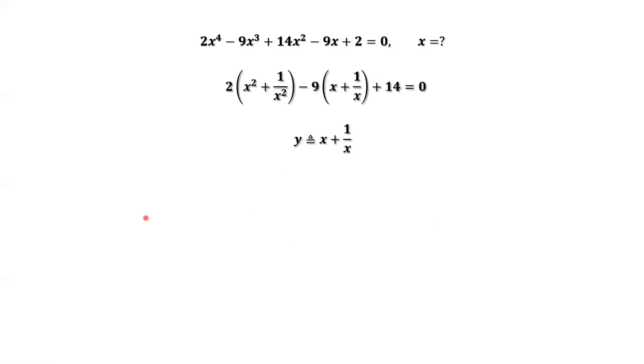We define a new variable: y equals x plus 1 over x. Then x squared plus 1 over x squared equals x plus 1 over x squared minus 2. Expanding this part, we have x squared plus 2x times 1 over x, which is positive 2, then plus 1 over x squared. We have an extra 2 here. Therefore, we need minus 2 to keep the balance.